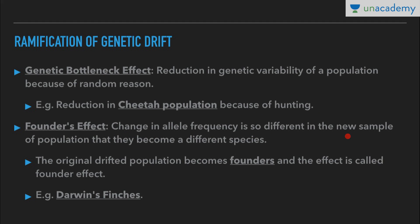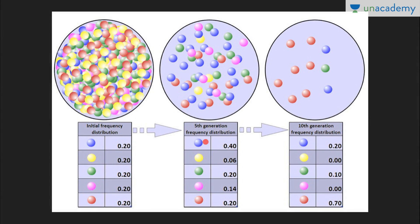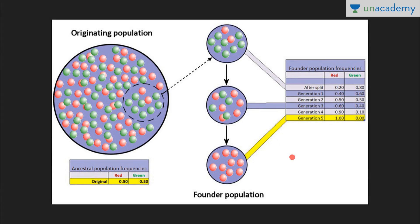Founder's effect: when the change in allele frequency is so different in a new sample of population that they become a different species, the original diverged population becomes the founders and the effect is called the founder's effect. Example: Darwin's finches. Genetic drift always operates in small populations. When such a major change occurs that the original population becomes founders for a new species, it is called the founder's effect. The accompanying picture depicts the bottleneck effect and the founder's effect.